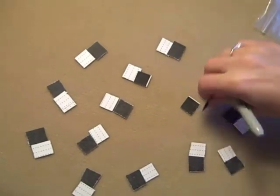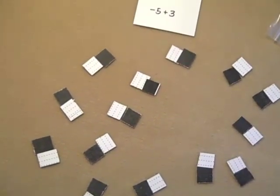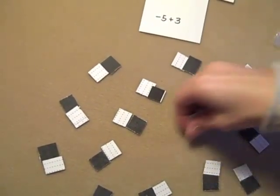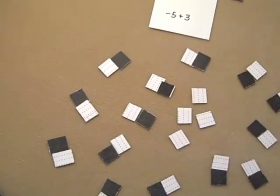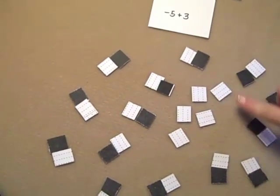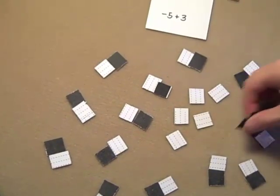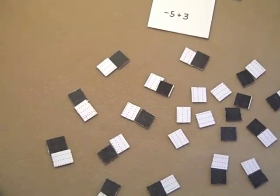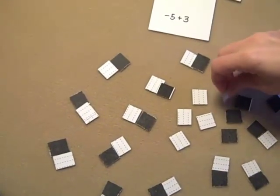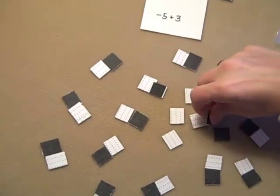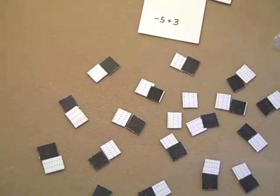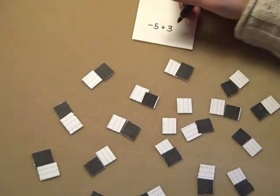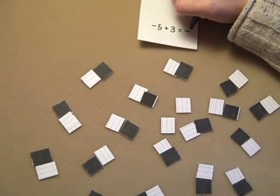We'll reset here, back to our sea of zeros. We can do something like negative 5 plus 3. I'd start with 1, 2, 3, 4, 5 negatives, then add 1, 2, 3 positives. I can make some zeros out of this. There's a zero right there, there's a zero right there, there's a zero right there. What I'm left over with is negative 2 and a sea of zeros.